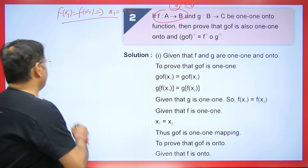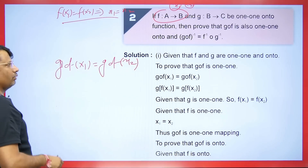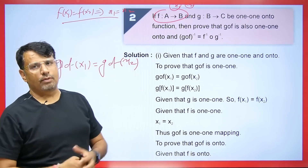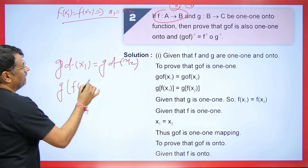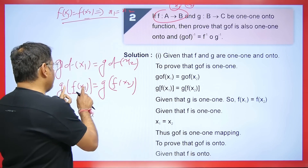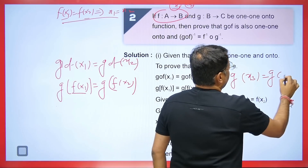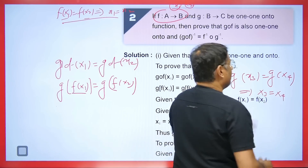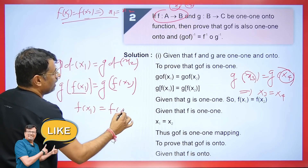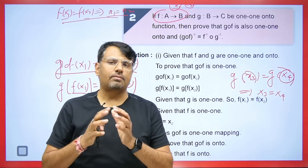Assume G∘F(X1) = G∘F(X2). Since G is one-to-one, G(F(X1)) = G(F(X2)) implies F(X1) = F(X2). Since F is one-to-one, F(X1) = F(X2) implies X1 = X2. Therefore G∘F is one-to-one. If the values of the functions are equal, then the input points are also equal.